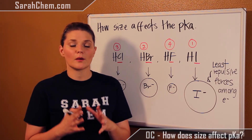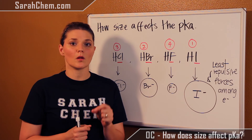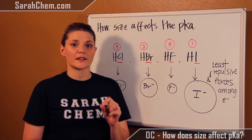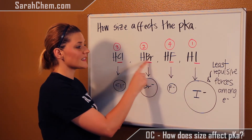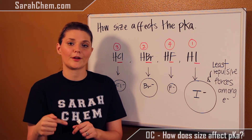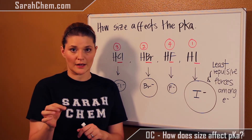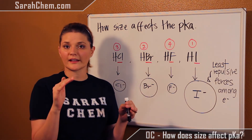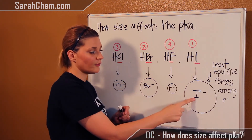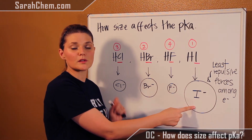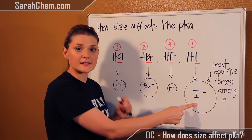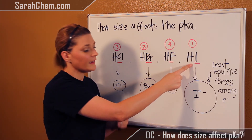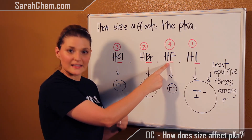One really important thing to understand: size will always trump electronegativity. We do not care that fluorine is the most electronegative. In cases where you have very disparate sizes — when moving down a column on the periodic table — size is the thing that matters. Because these atoms are very different in size, we're not looking at electronegativity. Iodine is the biggest, so the electrons are spread out and have the least repulsive forces, making it the most stable and therefore the most acidic. Fluorine is less stable, making it the least acidic.